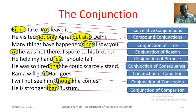Conjunction. A conjunction is a word used to join words or sentences. Either take it or leave it — either and or are correlative conjunctions. He visited not only Agra but also Delhi — not only and but also are compound conjunctions. Many things have happened since I saw you — here, since is a conjunction of time. As he was not there I spoke to his brother — here, as is a conjunction of reason.